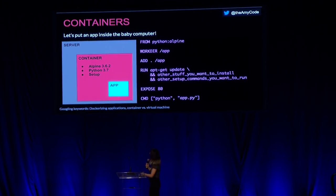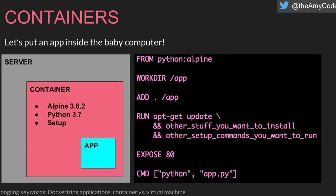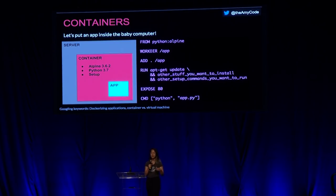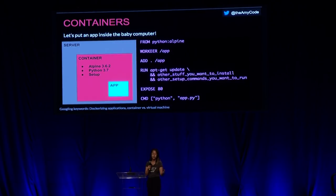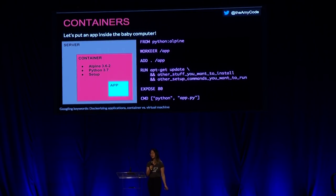On your left there is a pictorial representation of what's happening. So locally you're developing, and you have all these versions and operating system differences that you don't want to deal with when releasing to production. Here I have Alpine 3.6.2, Python 3.7, and a bunch of setup scripts. I'm copying my application binary into my container and exposing port 80 to expose my baby computer to the entire world.